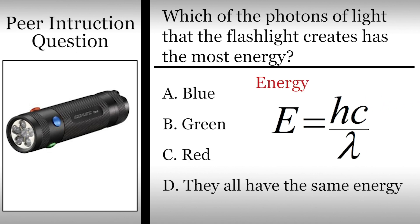The energy E of a photon is inversely proportional to its wavelength lambda. So the shortest wavelength photon, blue, has the largest energy while the longest wavelength photon, red, has the smallest energy.